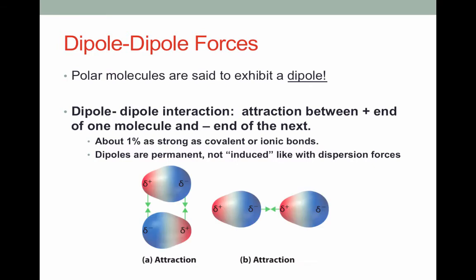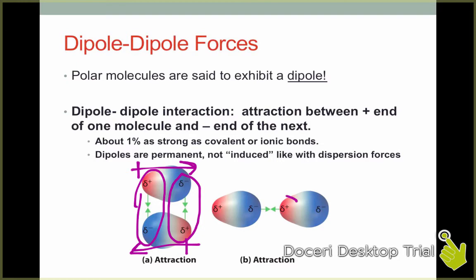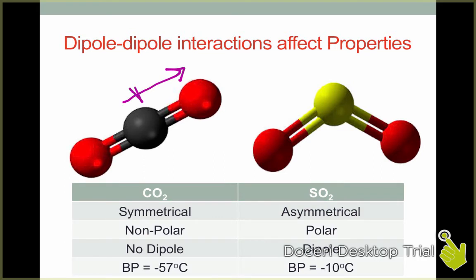Looking here, we see that these two molecules both exhibit a dipole — an uneven distribution of charge resulting from their structure. The dipole points towards the end labeled in blue. Notice that the negative end of one molecule will attract the positive end of its neighbor, and there are two possible orientations for this to happen. These attractions are known as dipole-dipole interactions. Consider two molecules: CO2 and SO2. CO2 is a linear molecule and SO2 is a bent molecule. Because CO2 is linear with dipoles pointing equally in both directions, it does not exhibit an overall molecular dipole and is therefore nonpolar, exhibiting no dipole-dipole interactions.